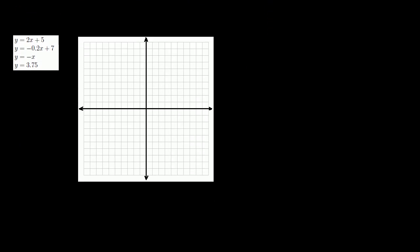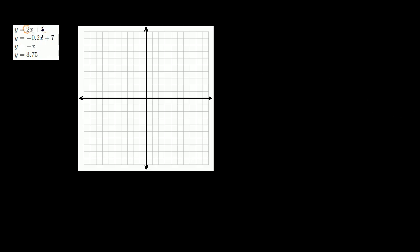Now let's go the other way — look at equations of lines and actually graph them. For the first line, the y-intercept is 5, so when x is equal to 0, y is equal to 5. The slope is 2, meaning when I move 1 in the x-direction, I move up 2 in the y-direction. Going backwards, if I move back 1 in x, I move down 2 in y. So the line looks like this, going on and on.